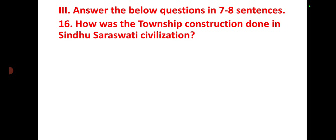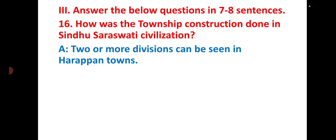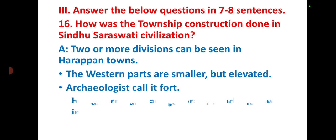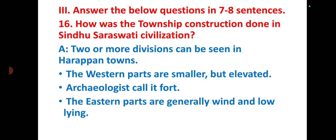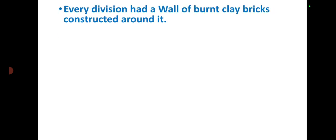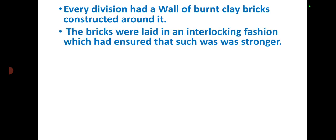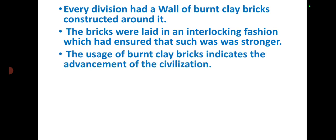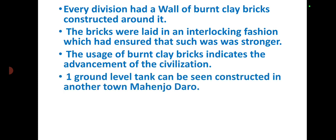How was the township construction done in the Sindhu-Saraswati civilization? Two or more divisions can be seen in Harappan towns. The western parts are smaller but elevated — archaeologists call it the fort. The eastern parts are generally wider and low-lying, called villages. Every division had a wall of burnt clay bricks constructed around it, laid in an interlocking fashion, ensuring strong construction. The use of burnt clay bricks indicates the advancement of this civilization.